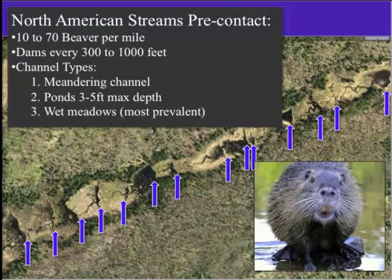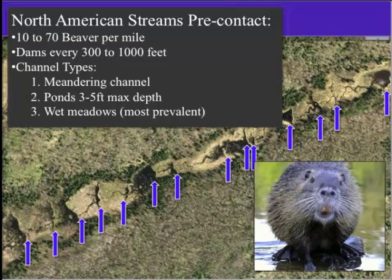The last point — kind of what stream restoration should be — is: what is our reference condition? What should streams be? We used to have streams that were far more low energy. In North America, in the pre-contact period — even before pre-settlement — headwater streams typically had 10 to 70 beaver per mile. They were continuous sequences of dams every 300 to 1,000 feet. But the channel types for first, second, even third order streams were some meandering single-thread channels, but a whole lot of small pools and really dominated by wet meadow conditions. That's what was here.